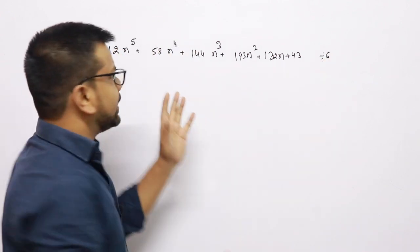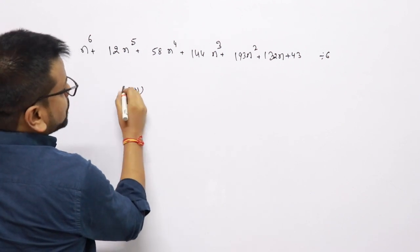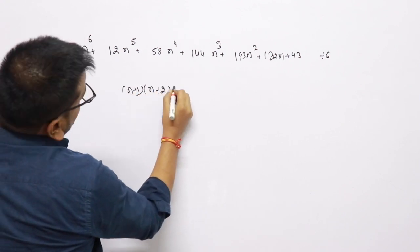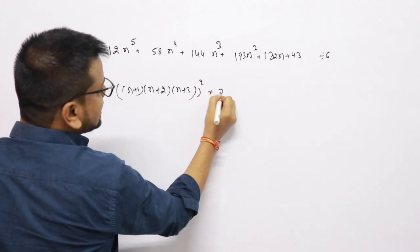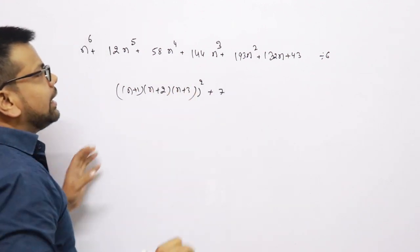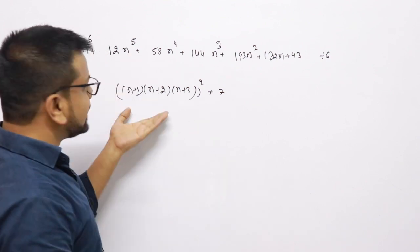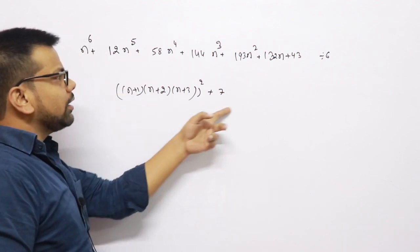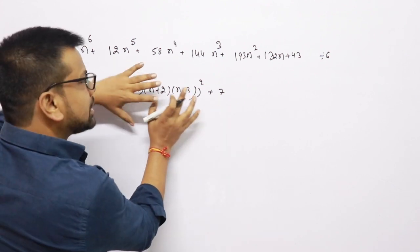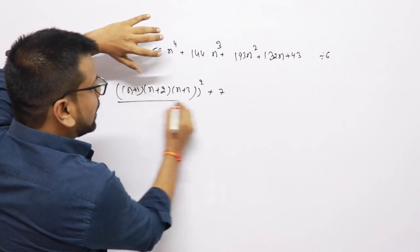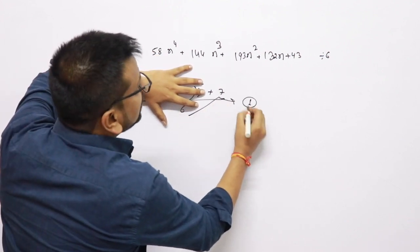Actually, I can rewrite this question. This expression is (n+1)(n+2)(n+3) all squared, plus 7. If you look at the product of 3 consecutive numbers, it will always be divisible by 6. So if I divide by 6, that part divides cleanly, and the answer for that part is remainder 1.